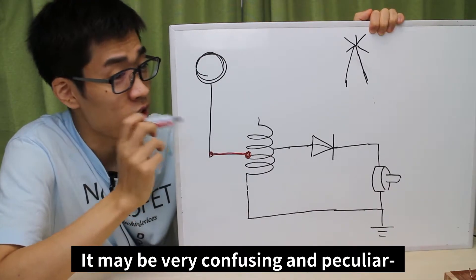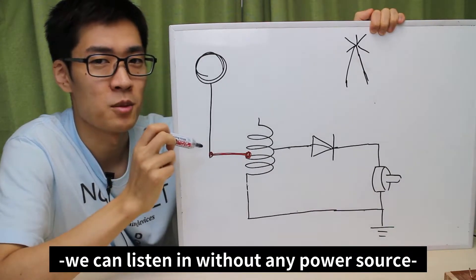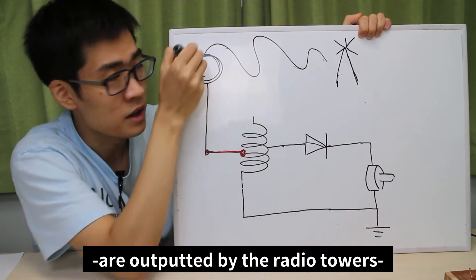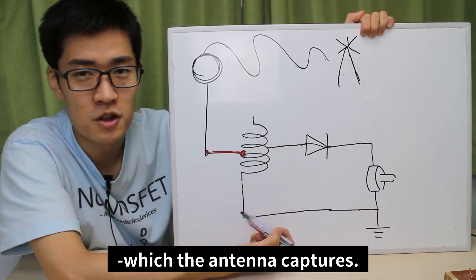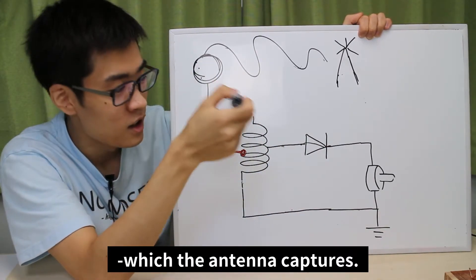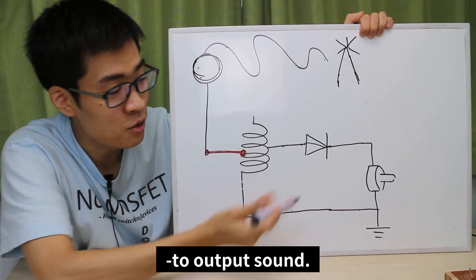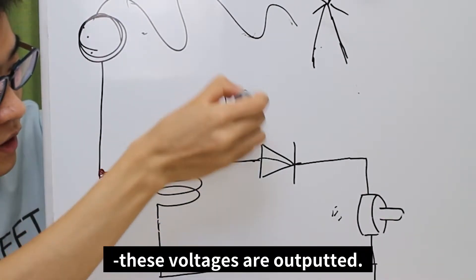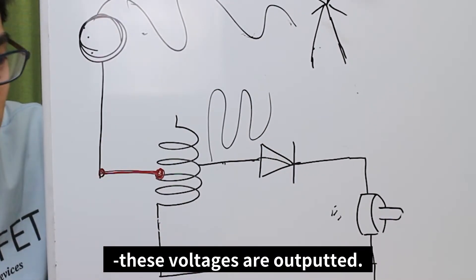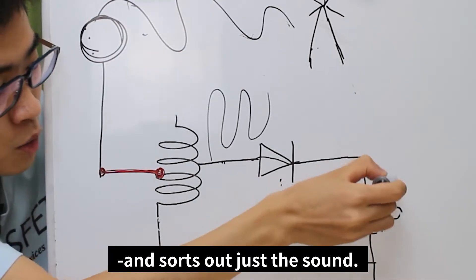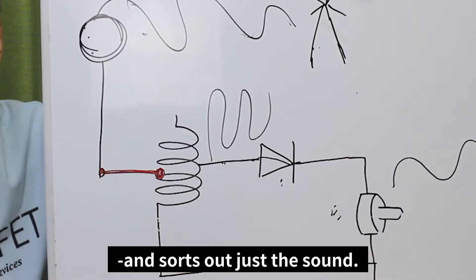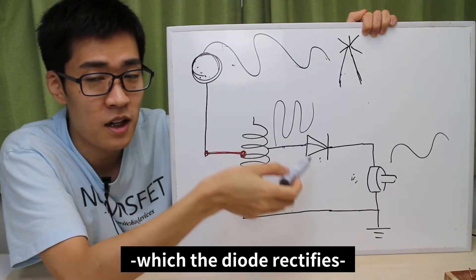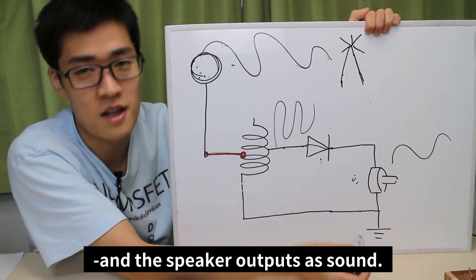It may be very confusing and peculiar how we can listen without any power source, but there is a legitimate reason behind it. The radio waves are outputted by the radio towers, which the antenna captures. The antenna makes use of these radio waves to output sound. Once the antenna captures the radio waves, these voltages are outputted. The diode then rectifies the voltage and sorts out just the sound. It's actually very simple. The antenna captures the waves, which the diode rectifies, and the speaker outputs its sound.